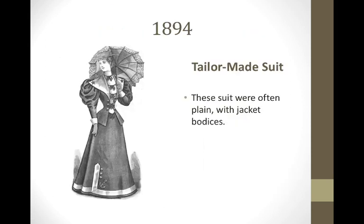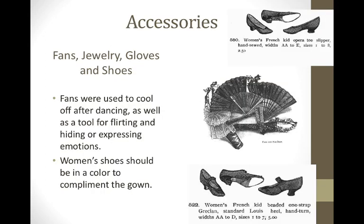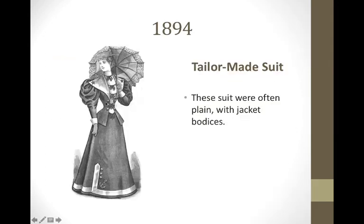In 1894, something really great happened: the tailor-made suit occurred. This suit was very plain, usually with jacket bodices. What this means is that we can now have different outfits — sort of. They could switch the jackets out with different dresses. We don't have separates yet; these are still dresses, but now they can switch their jackets out and have a different appearance.